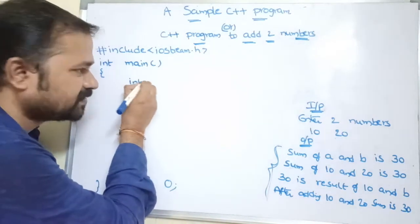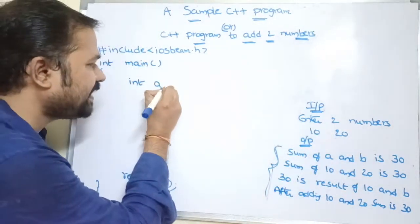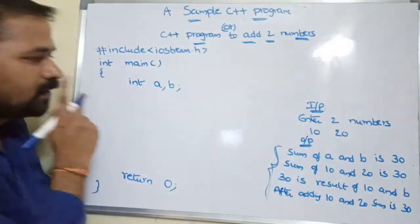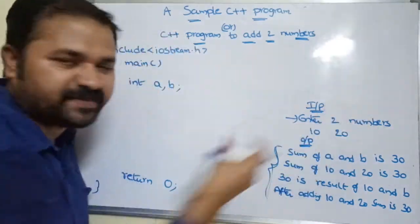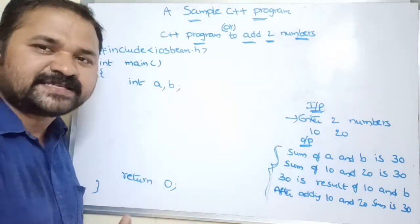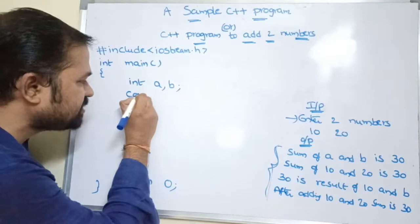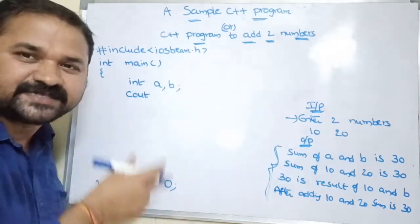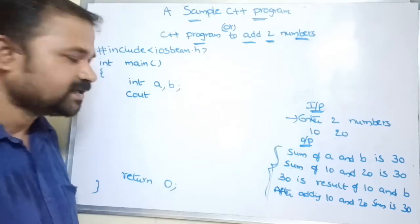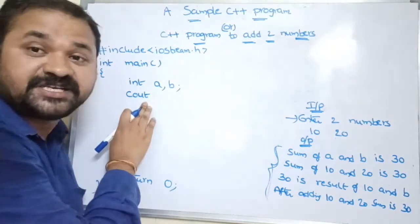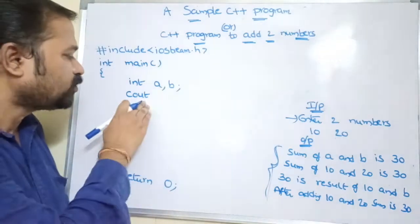Next, we declare the variables we need: `int a, b`. Then for the output statement 'enter two numbers' — if you want to display a message on the monitor, we use an object called the cout object. cout is like the printf function we use in C language, but here we call cout an object, not a function.